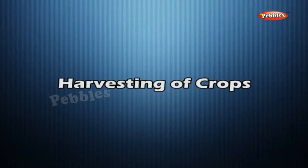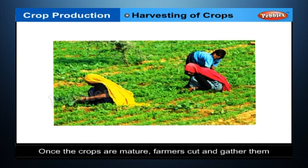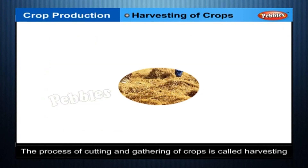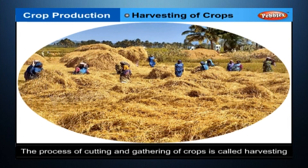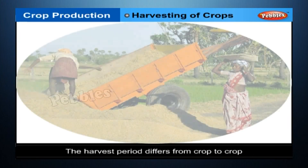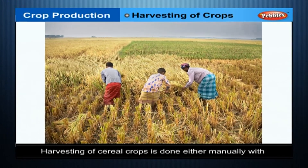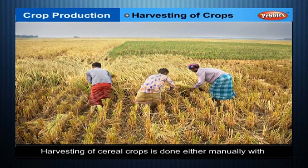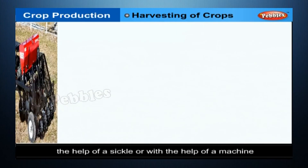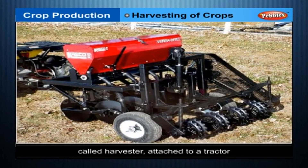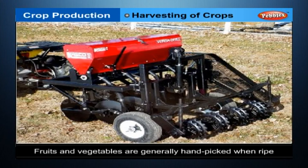Harvesting of Crops: once the crops are mature, farmers cut and gather them. The process of cutting and gathering of crops is called harvesting. The harvest period differs from crop to crop. Harvesting of cereal crops is done either manually, with the help of a sickle, or with the help of a machine called a harvester attached to a tractor. Fruits and vegetables are generally hand-picked when ripe.